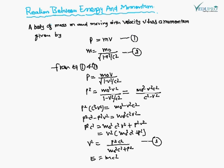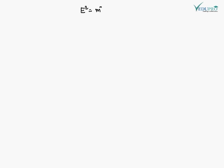We know that E = mc², so E = m₀c² / √(1 - v²/c²), which gives E² = m₀²c⁴ / (1 - v²/c²). This is equation number four. Now we substitute the value of v² from equation three.